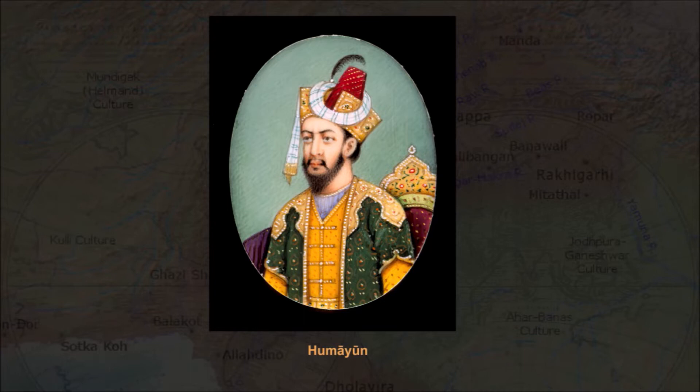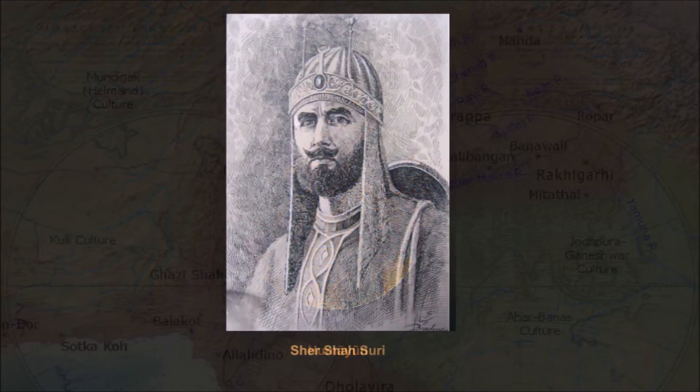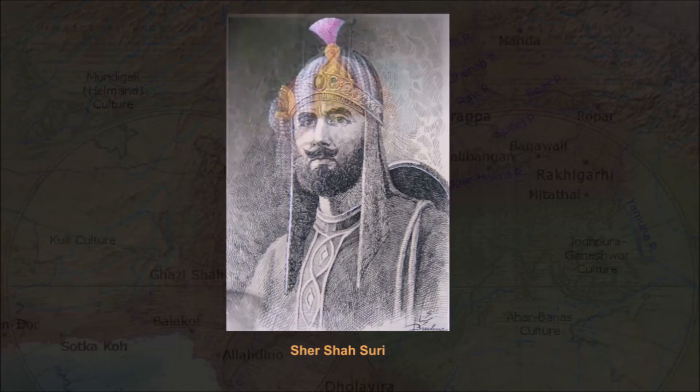Babur's son Humayun, who reigned 1530–40 and 1555–56, had lost territory to Sher Shah Suri. The Suris and Hemu ruled the area from 1540 to 1556.